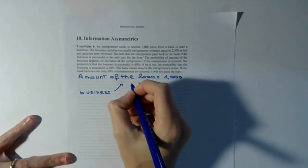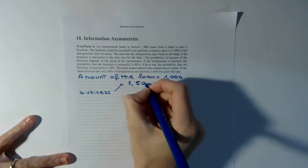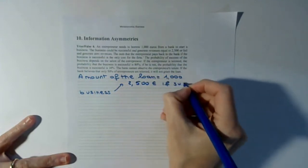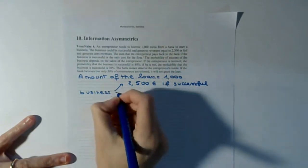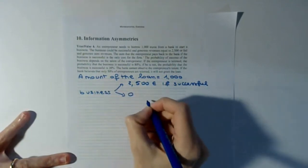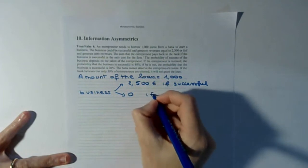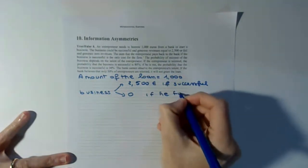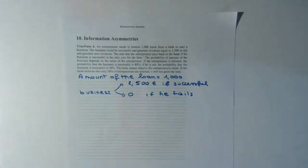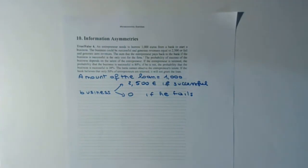The fact that the sum the entrepreneur must pay back to the bank if the business is successful is the only cost of the firm means that if the business fails, the entrepreneur will not pay anything to the bank. This is what we are assuming.